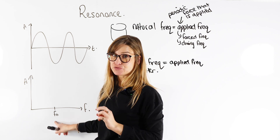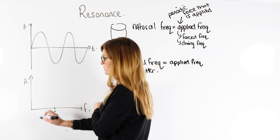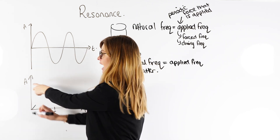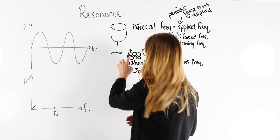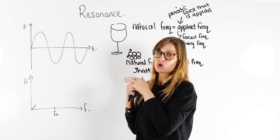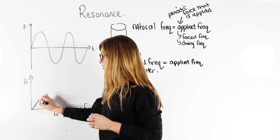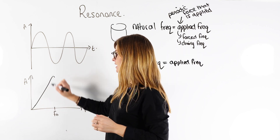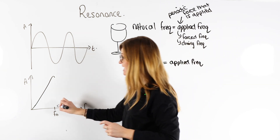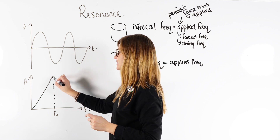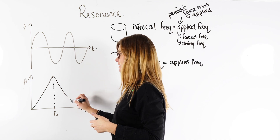If we look at our graph — let's say our glass has a natural frequency it wants to oscillate at and we start applying a frequency — the amplitude, which is the maximum displacement of the oscillation, is going to increase as we apply the frequency. It keeps increasing until we hit a peak. That peak happens when the applied frequency exactly equals the natural frequency. And then if we keep increasing that frequency beyond the peak, the amplitude of the oscillations starts decreasing again.